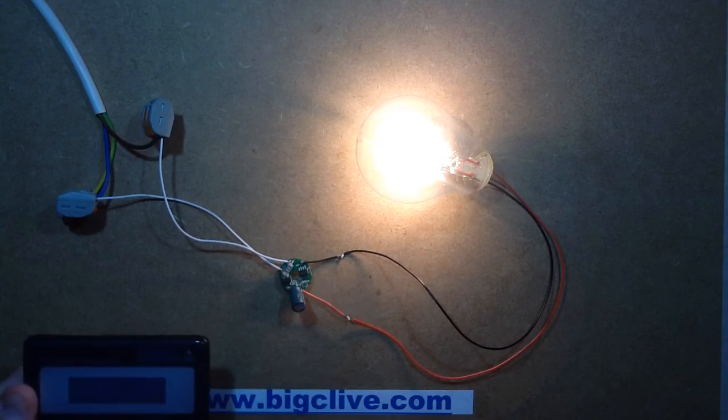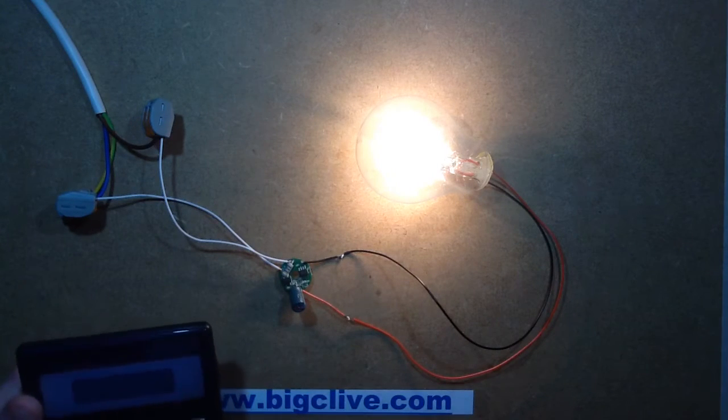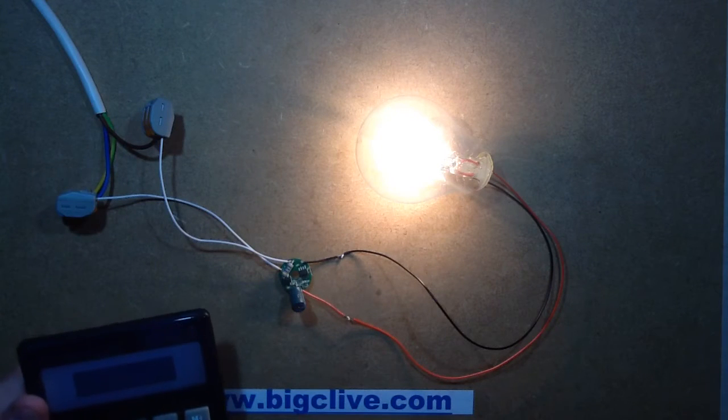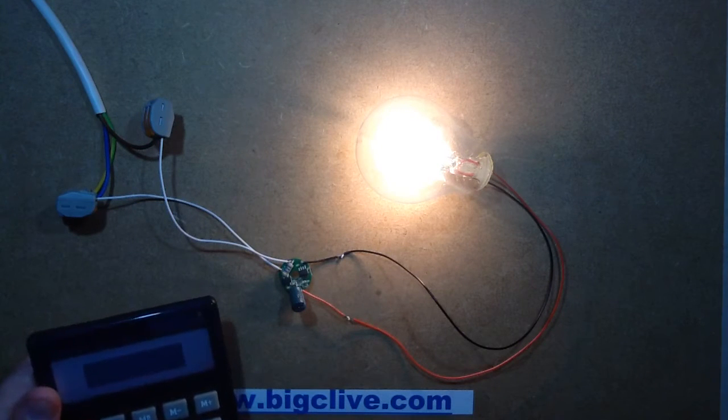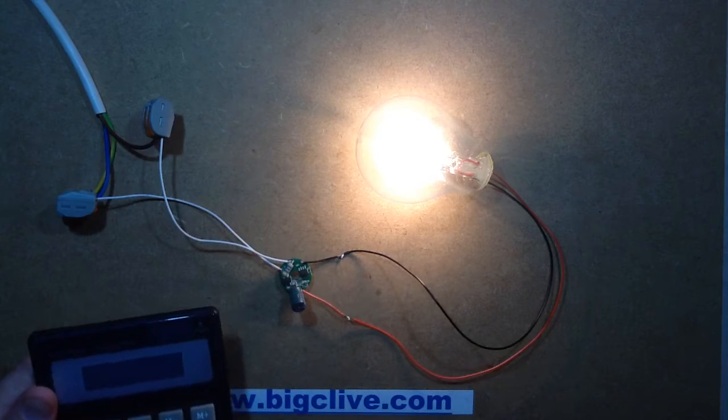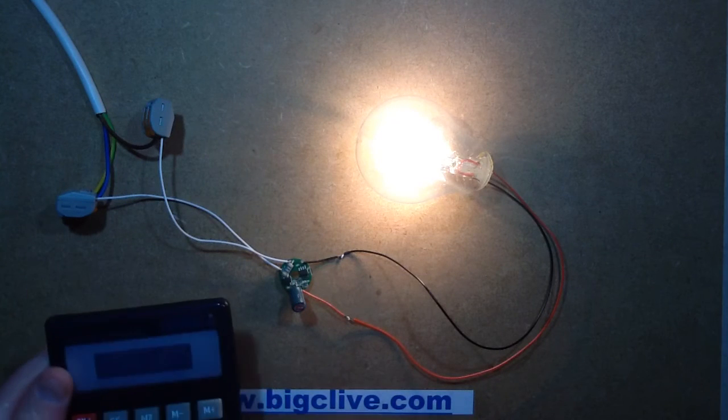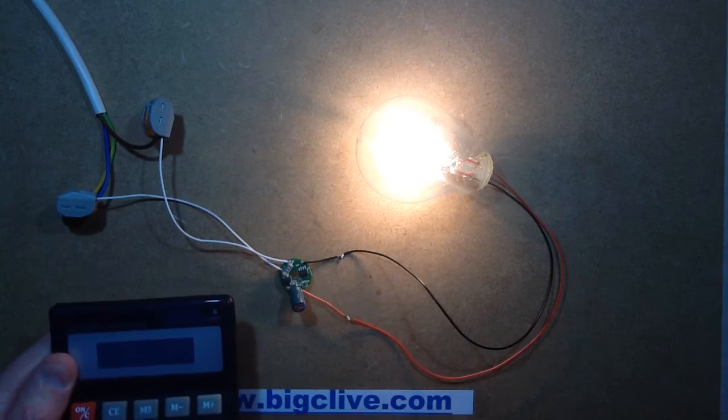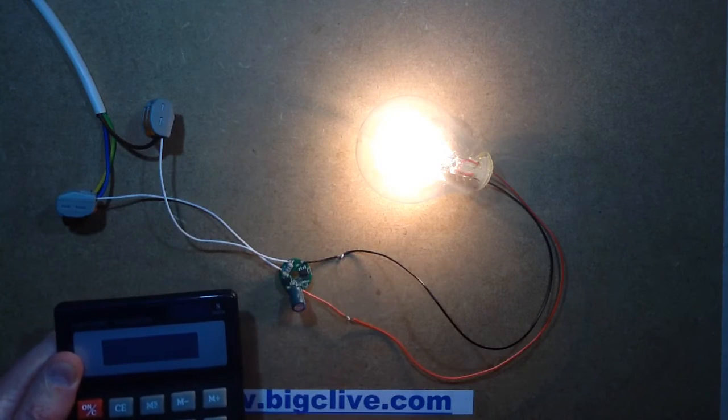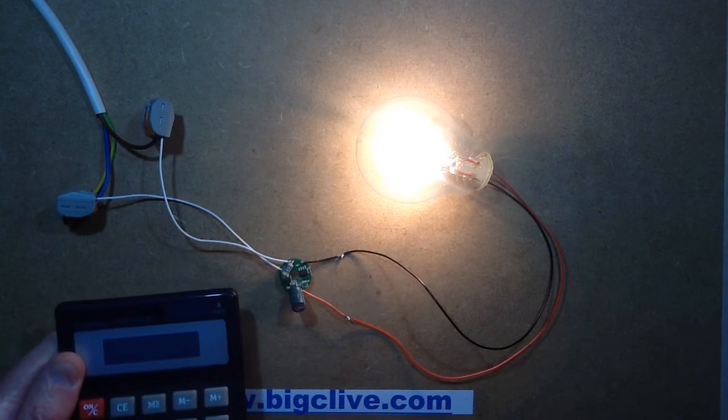The dissipation in the chip, if you consider that the voltage across the capacitor is probably 336 as it was before, 336 which is rectified mains voltage minus the 262 volts equals 74 volts being dropped across that chip.